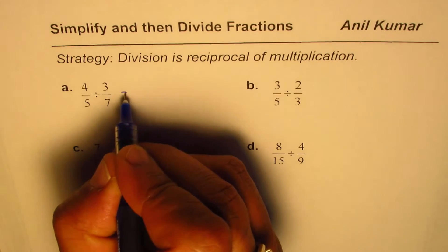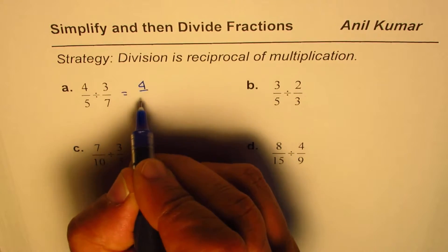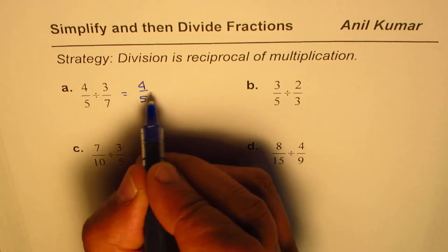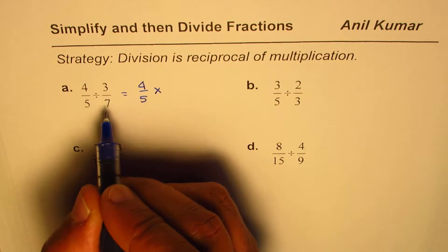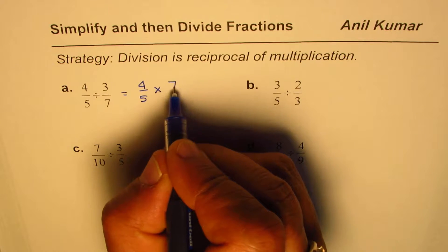Let me write them first as multiplication. For 4/5 divided by 3/7: division is the reciprocal of multiplication, so we change division to multiplication, but then we have to swap or flip 3/7. We write this as 4/5 × 7/3.